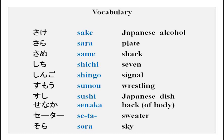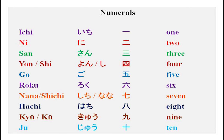Now for the numerals. Very, very quickly: ICHI (1), NI (2), SAN (3), YON (4), GO (5), ROKU (6), NANA (7), HACHI (8), KYU (9), JUU (10). Once again: ICHI, NI, SAN, YON, GO, ROKU, NANA, HACHI, KYU, JUU. It is a long sound, so please practice this so that you are comfortable when we do something new in our next class.